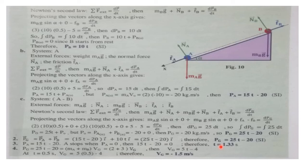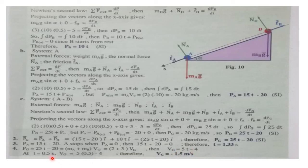In part 4, we need the speed of the center of mass g at t equals 0.5 seconds. The expression of the linear momentum of g is Pg equals 25t minus 20 equals (MA plus MB) times Vg. So, 25t minus 20 equals 5Vg, giving Vg equals 5t minus 4. At t equals 0.5 seconds, Vg equals 5 times 0.5 minus 4, therefore Vg equals minus 1.5 m/s.